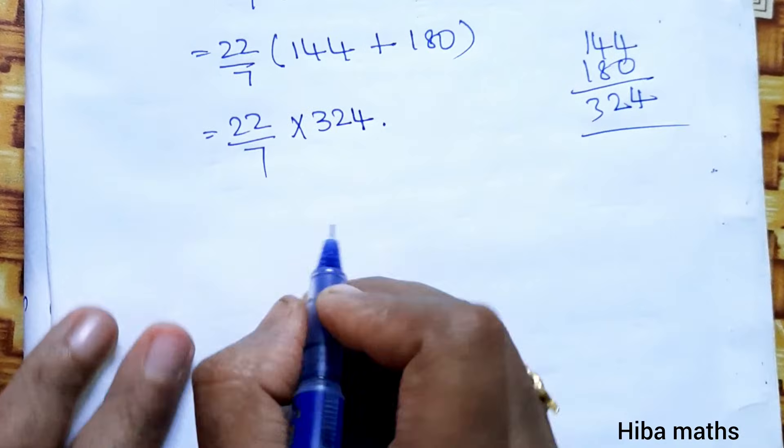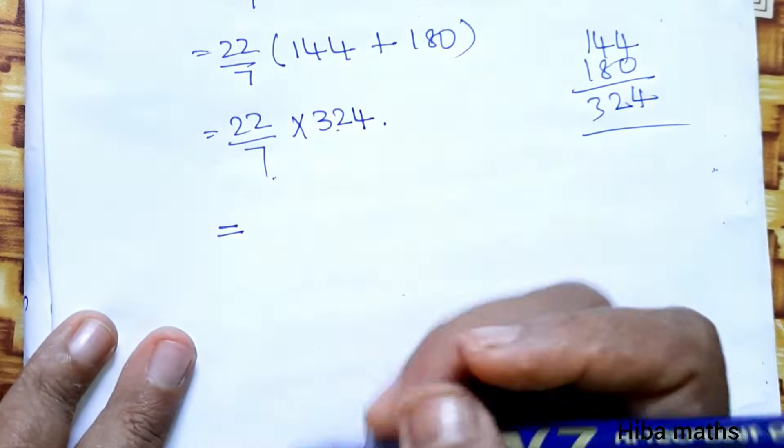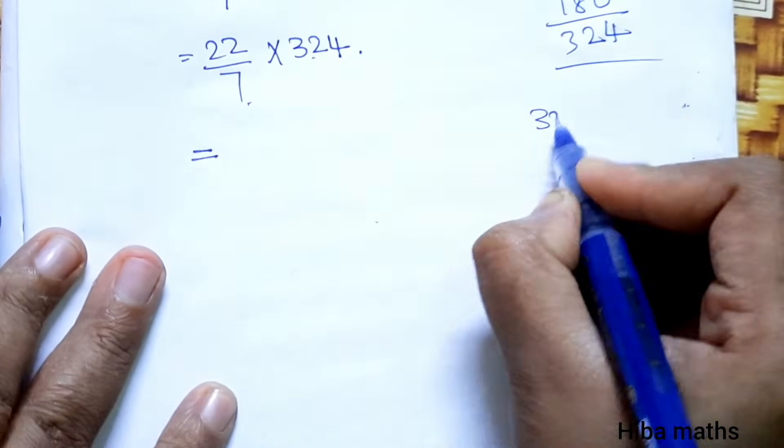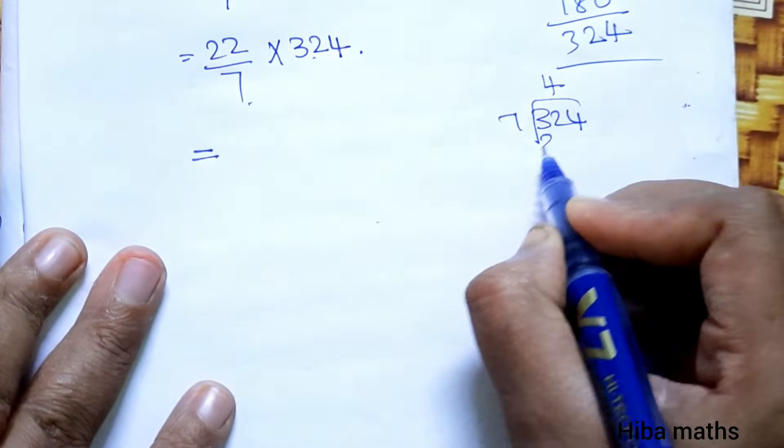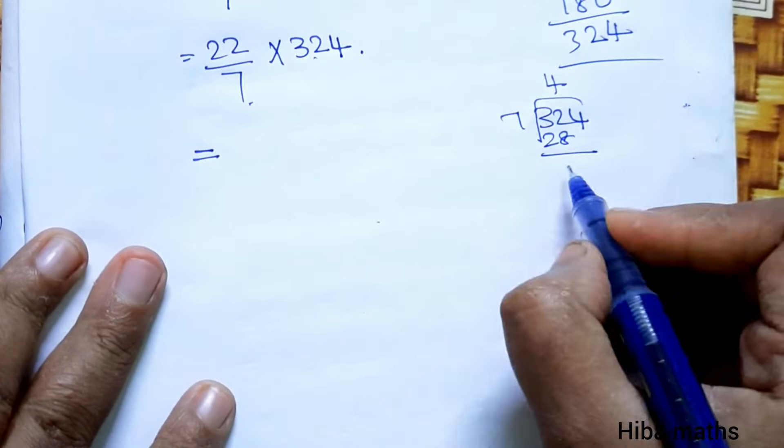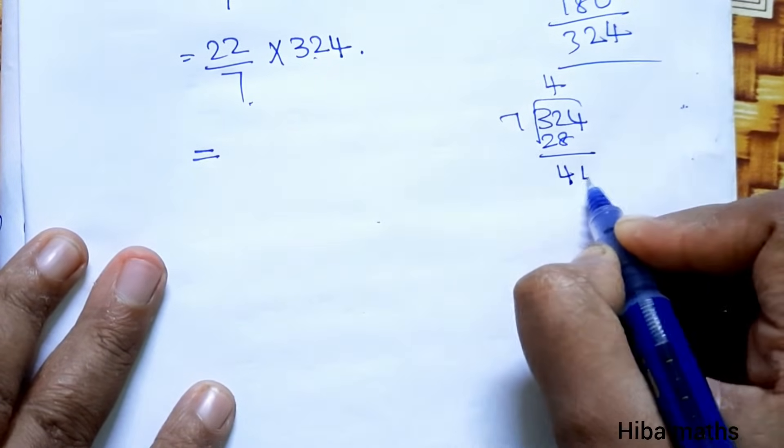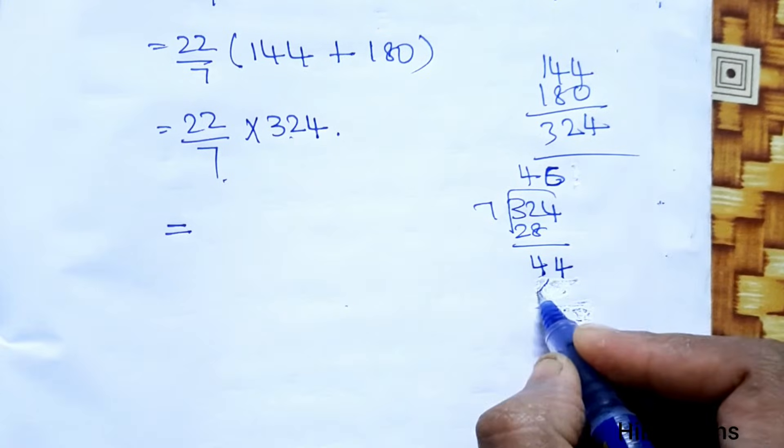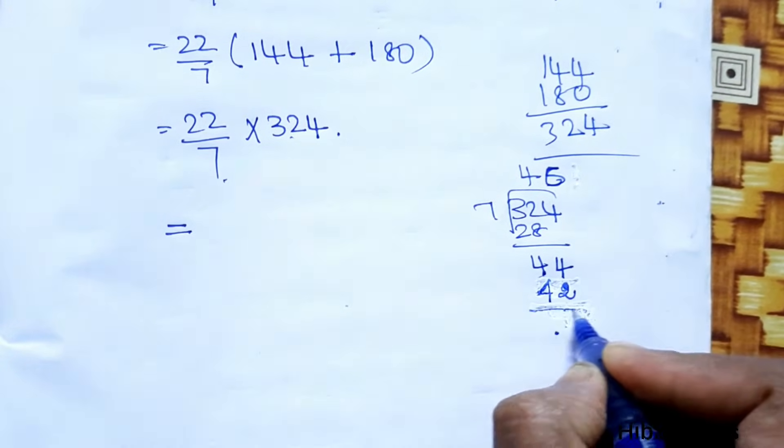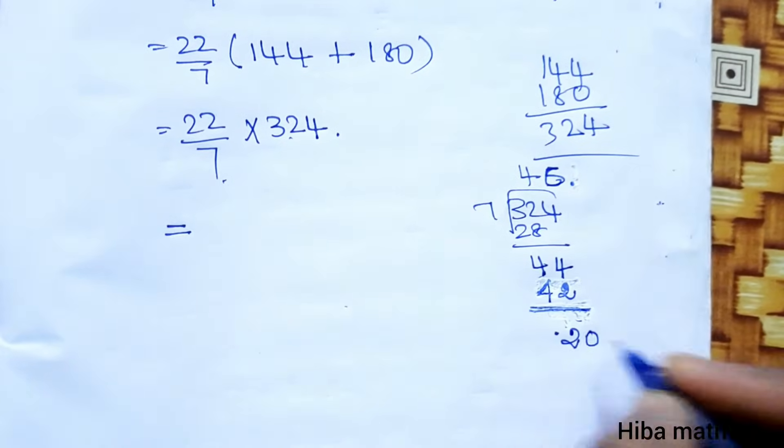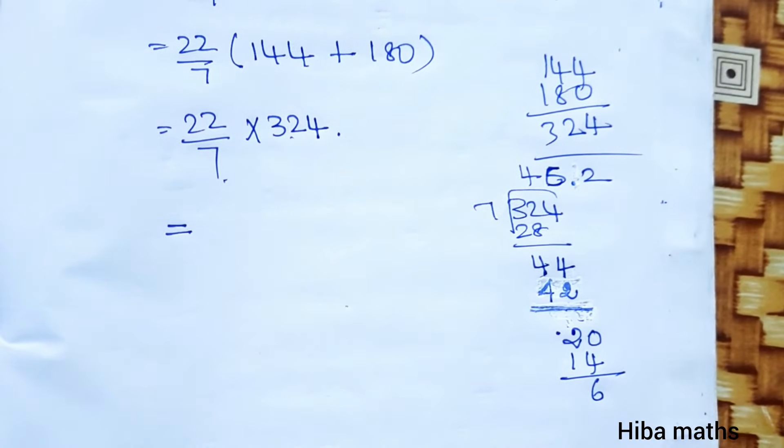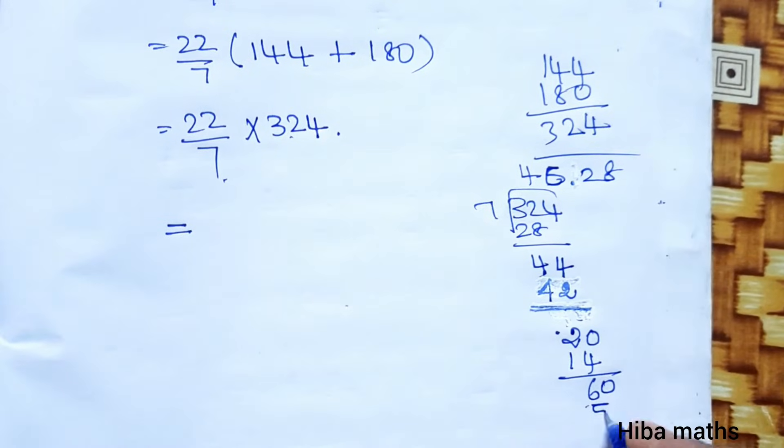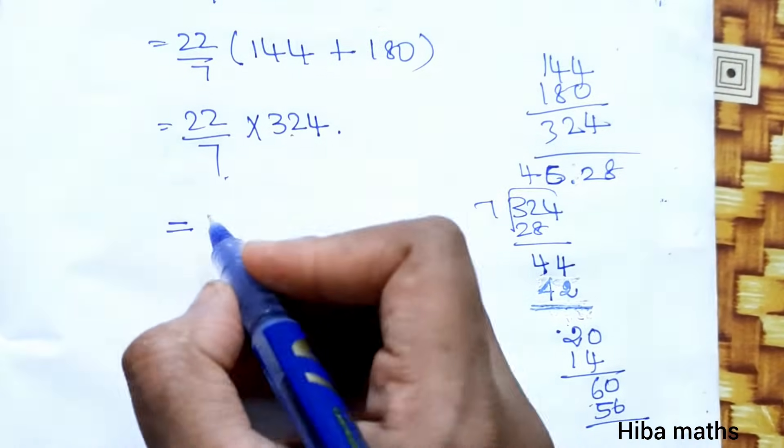Calculating: 324 divided by 7. Working through the division: 7 into 32 is 4 remainder 4, bring down 4 to get 44. 7 into 44 is 6 remainder 2. So we get 46 with remainder 2, giving 46.28 with two decimal places.